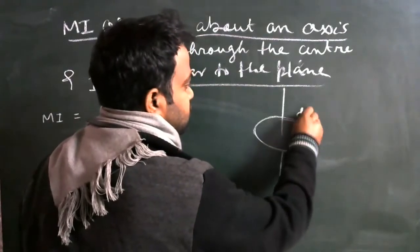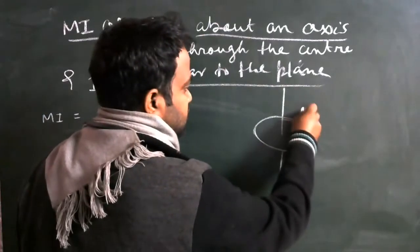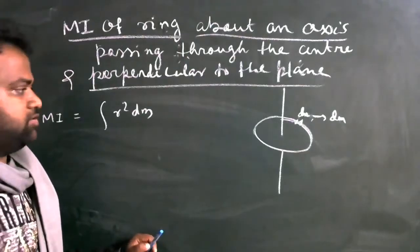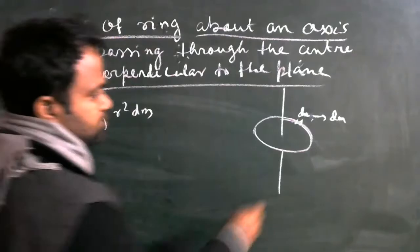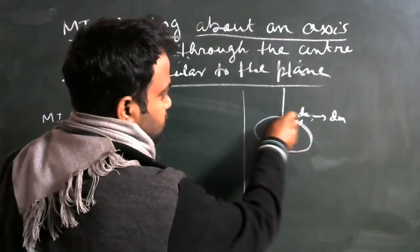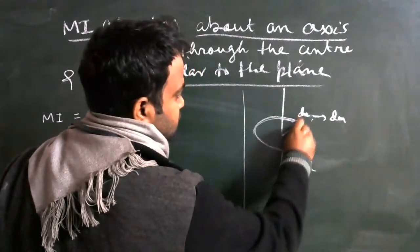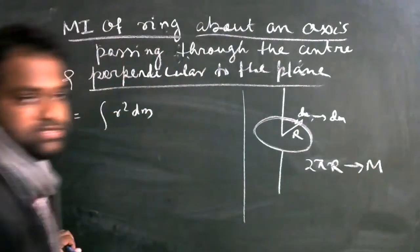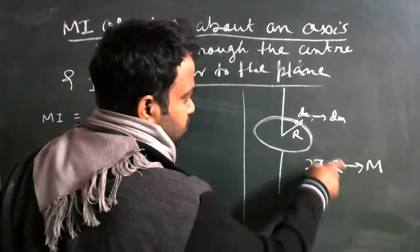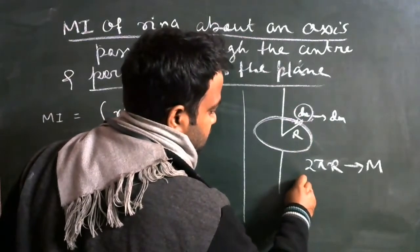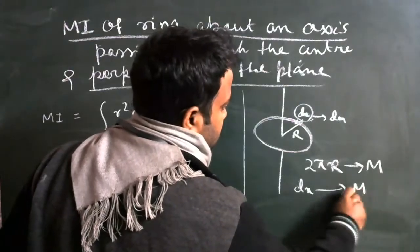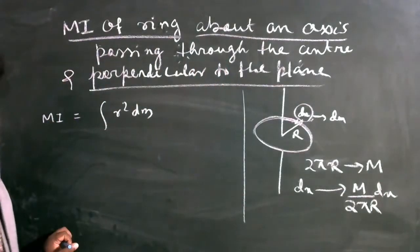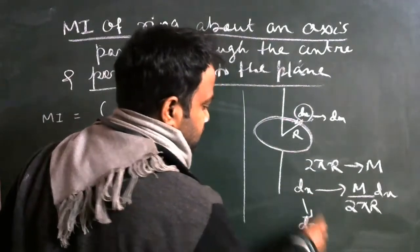Now let's take this small mass as dm, small length dx, and this small length dx has mass dm. For the full length of this ring that is radius capital R, so for 2πR, the total mass is capital M. For unit length it is M by 2πR, and for dx length the mass is M by 2πR times dx. And that mass of dx length is dm.